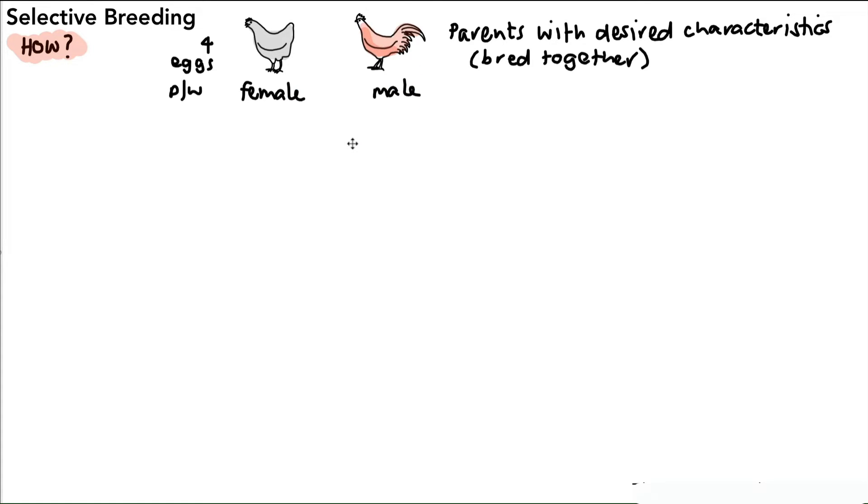And we look at the offspring and you might find variation. You will find variation. Perhaps the first chicken over here in the offspring produces one egg per week. Maybe the second one produces, say, two just for argument's sake, and then the third one we have producing our four eggs.